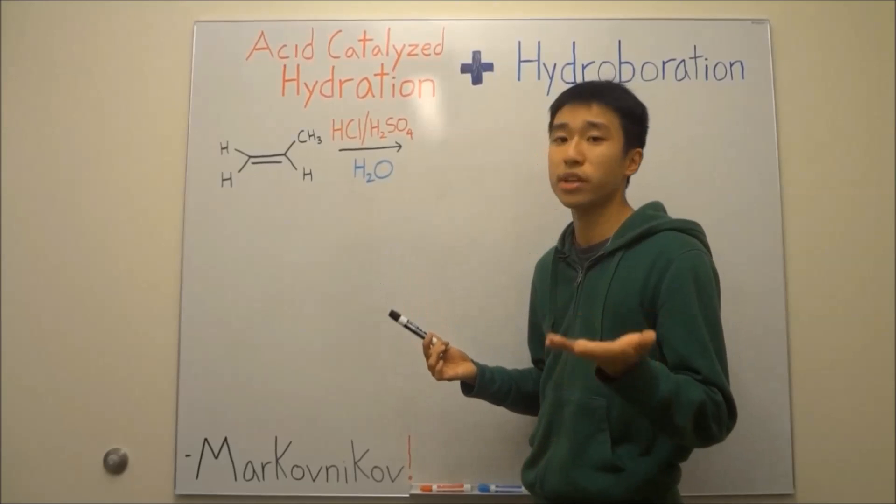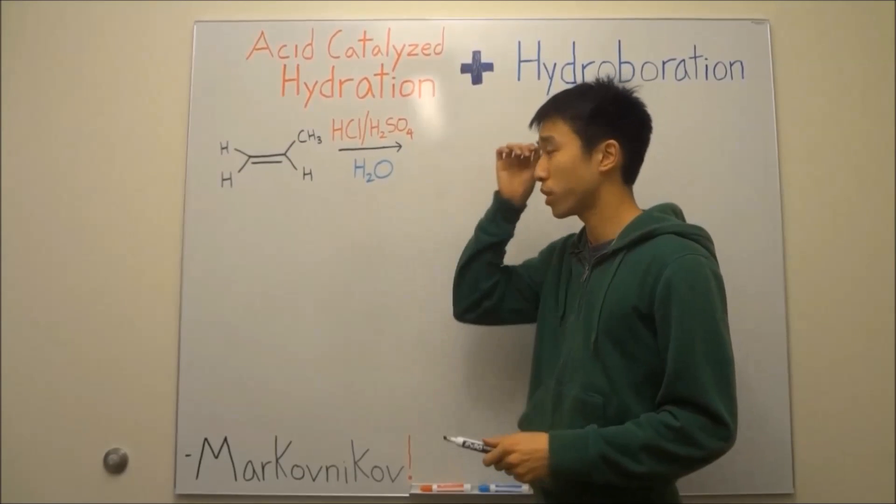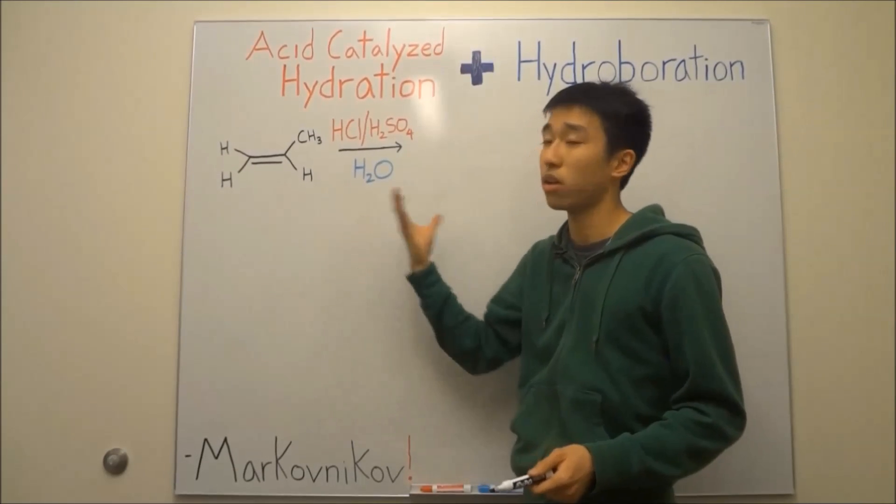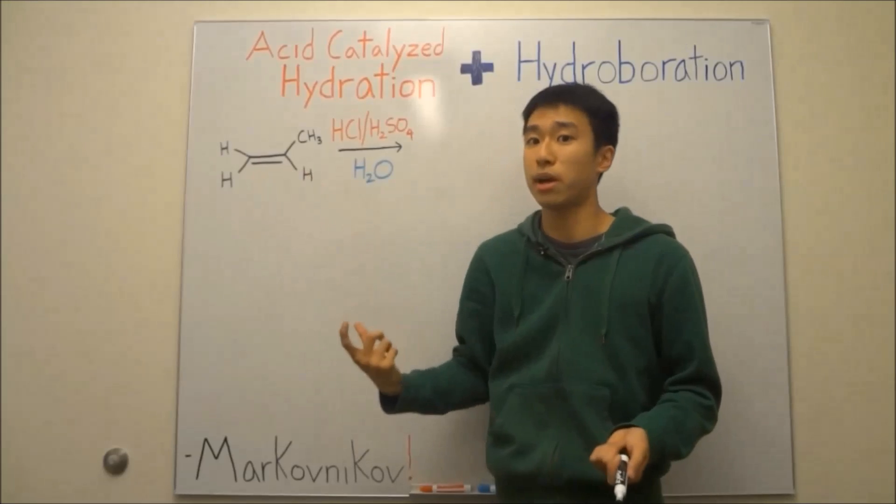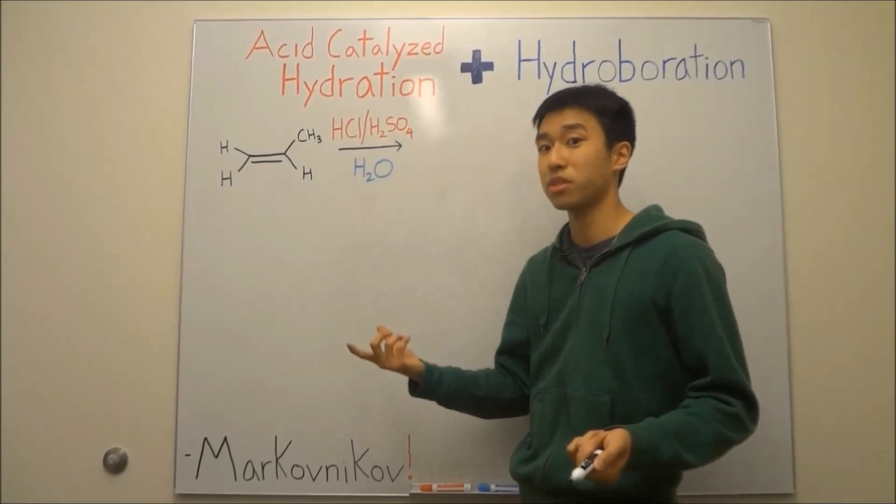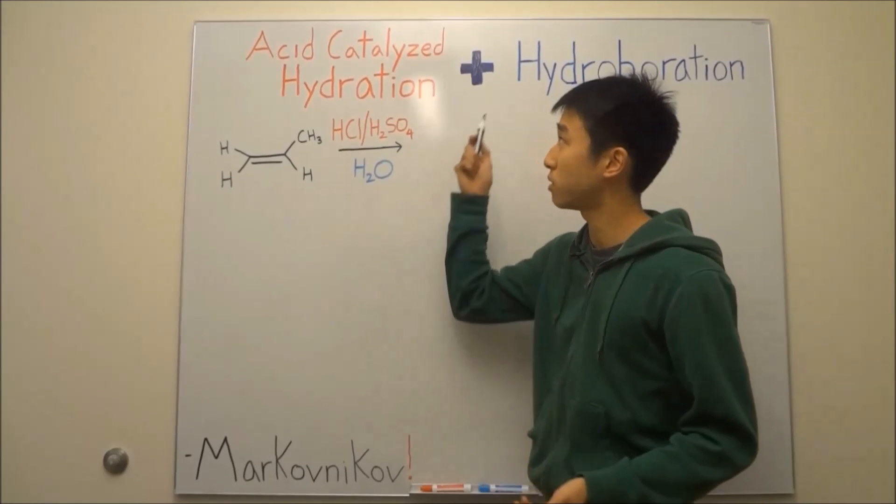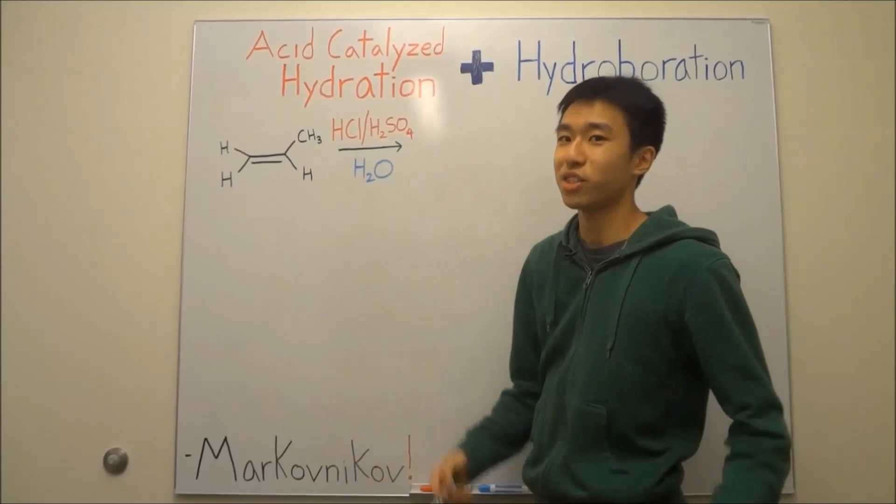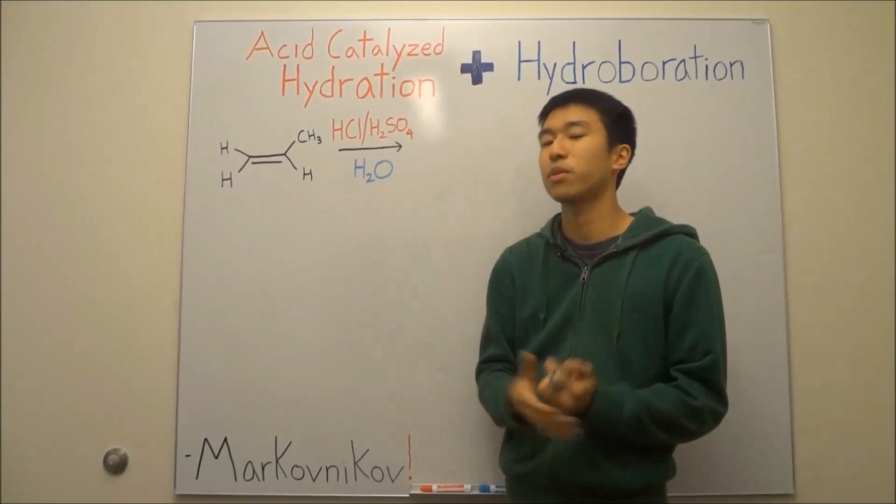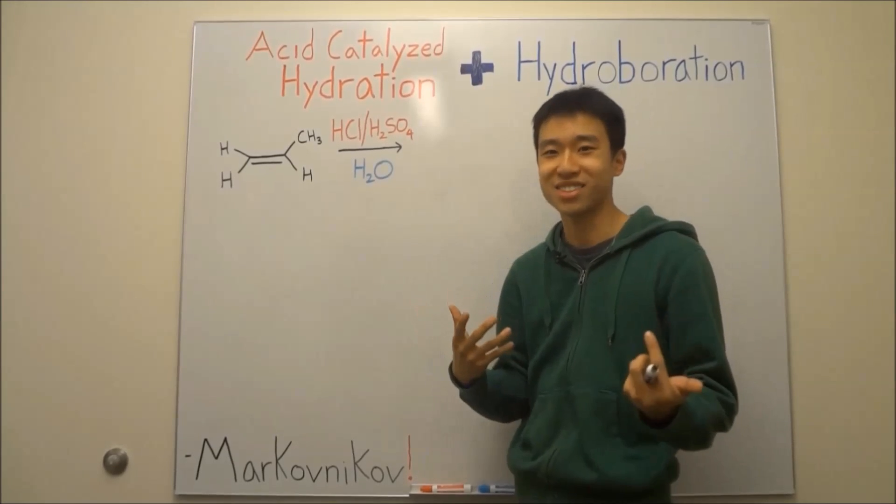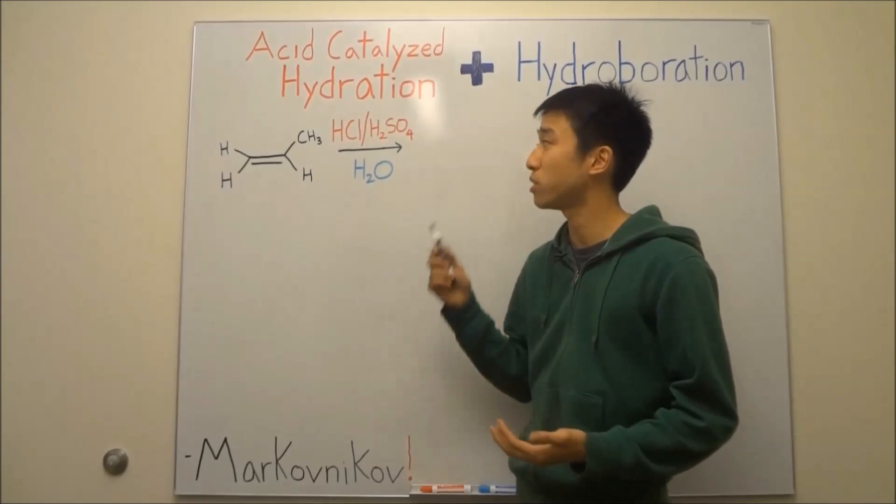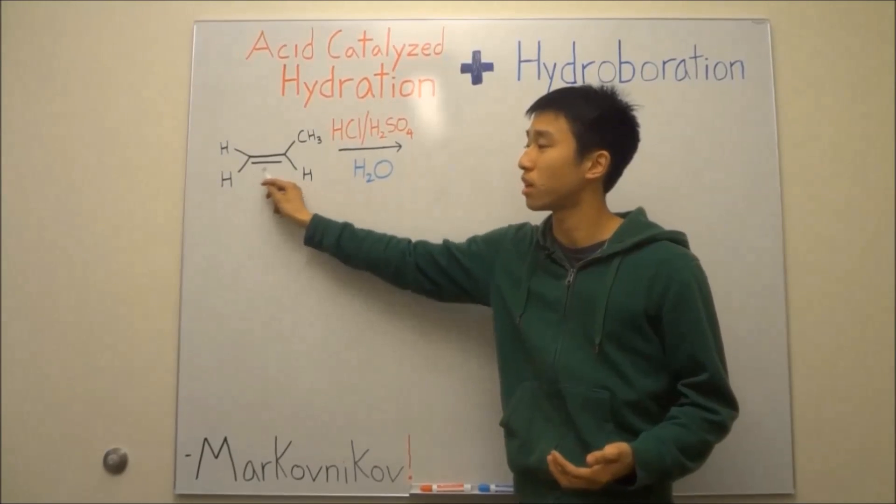So hopefully you guys already know that this is going to be an addition reaction. So we're going to be using up our double bond over here in order to add things, atoms and molecules to the carbons of the double bond that we're going to be using up. So the question is, what are we going to be adding to the carbons of the double bond? Well, since the reaction's name is acid-catalyzed hydration, chances are we're going to be adding a proton or hydrogen, because think back to GenChem, what do acids do? Acids donate protons that are basically just hydrogens. So we're going to be donating a hydrogen to one of the carbons of the double bond.